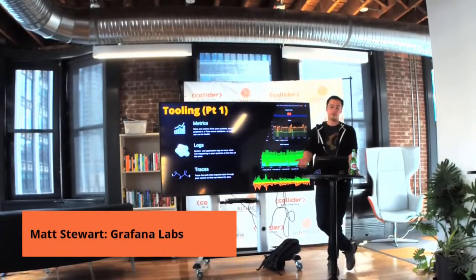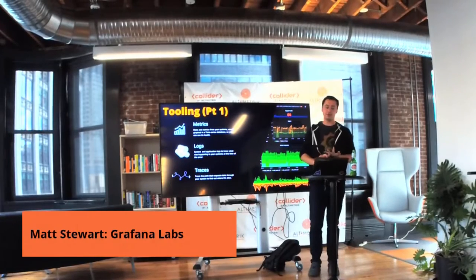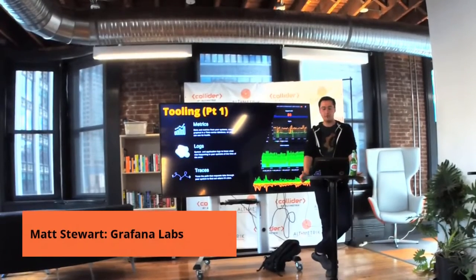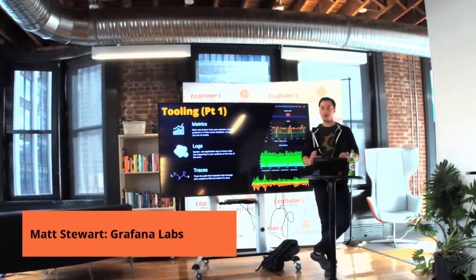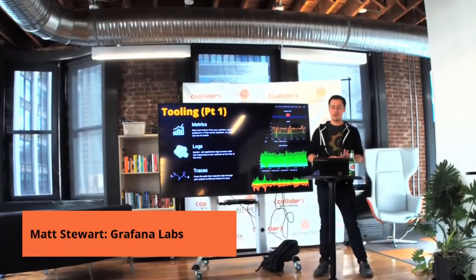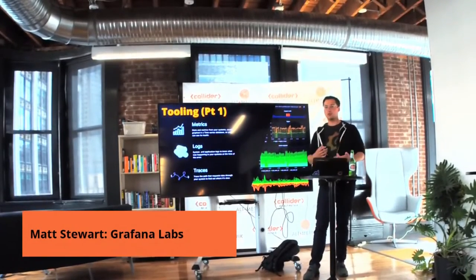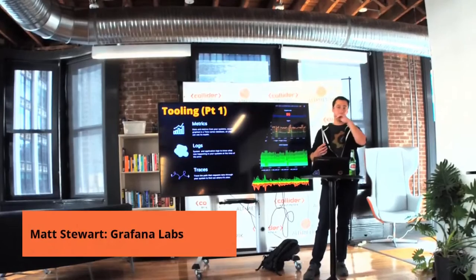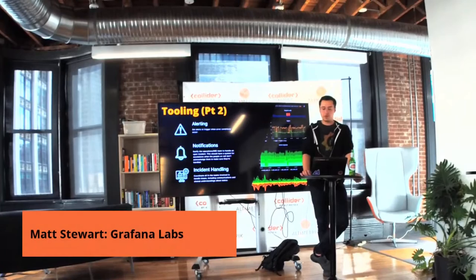When we think about metrics, common open and closed source solutions include Prometheus — definitely the biggest — Elasticsearch, Datadog, and Victoria Metrics. For logging, Grafana has Loki, Elasticsearch is out there, Splunk, and Datadog. For traces, you think of AppDynamics, New Relic, Elastic, and then Tempo from Grafana Labs. There's a lot of tooling out there, some open source, some closed source, each doing things a little differently but trying to accomplish the same goals — along with alerting and notifications.